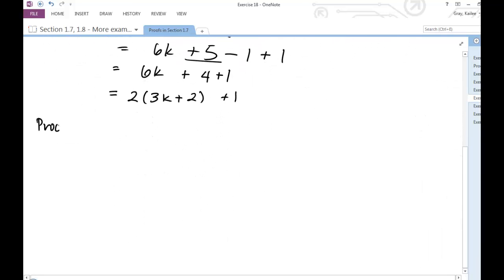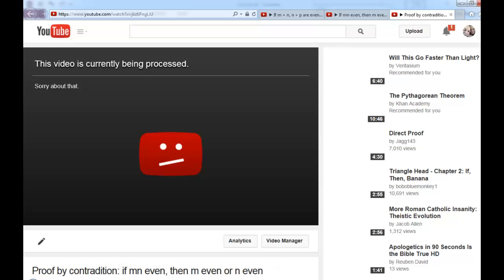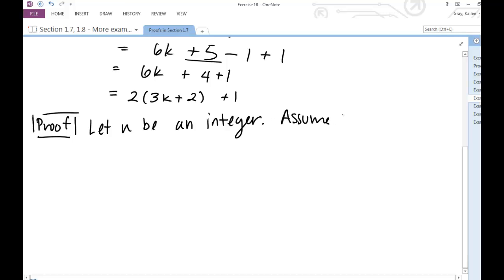Alright, so proof. Now remember, your proof should stand alone, with or without the statement before it. You should be able to look through the proof and clearly identify what implications have been proven. So, we're going to start by: let n be an integer. Assume, for contraposition, n is odd.